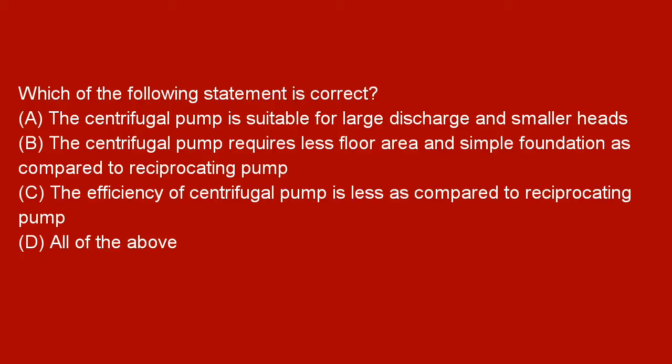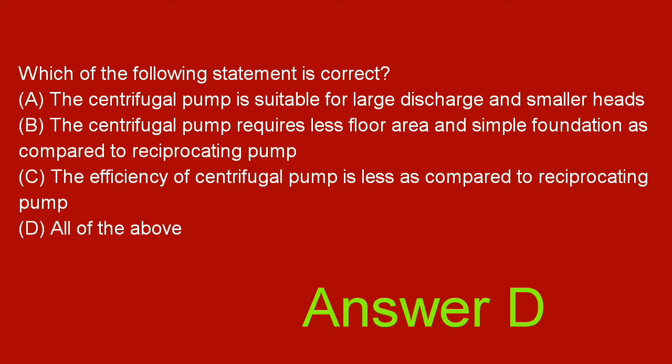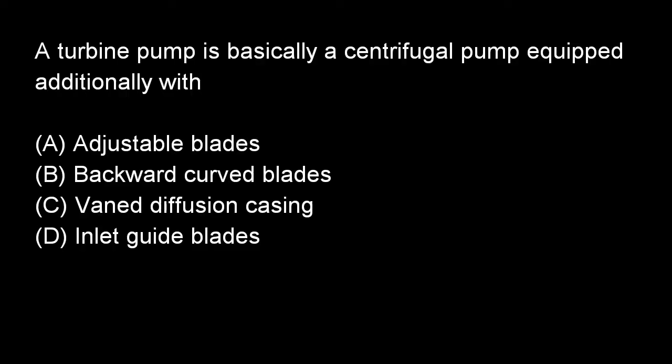Next question: Which of the following statements is correct? All of the following are correct: centrifugal pump is suitable for large discharge and smaller head; centrifugal pump requires less floor area and simple foundation compared to reciprocating pump; efficiency of centrifugal pump is less compared to reciprocating pump. Option D — all of these — is right. Next question: A turbine pump is basically a centrifugal pump equipped additionally with vane diffusion casing. Option C is right.